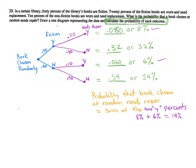The last question, number 20, says: in a certain library, 40% of the library's books are fiction. 20% of the fiction books are worn and need replacement. And 10% of the nonfiction books are worn and need replacement. What is the probability that a book chosen at random needs repair? Draw a tree diagram representing the data and calculate the probability of each outcome.